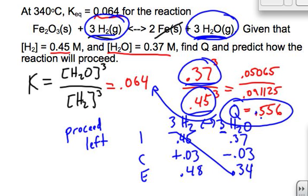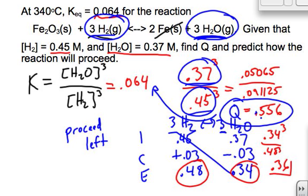So if we plug these new values into our equation from before, 0.34 cubed over 0.48 cubed, I'm going to get 0.36 is my new value. Now this still isn't where I need to be, which is 0.064, but notice it is smaller than the original value of 0.556. So this reaction is going to continue. This water is going to keep dropping, and this hydrogen is going to keep going up until this ratio here equals 0.064. So this reaction is going to keep going to the left until that happens.